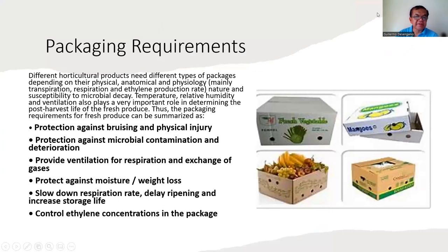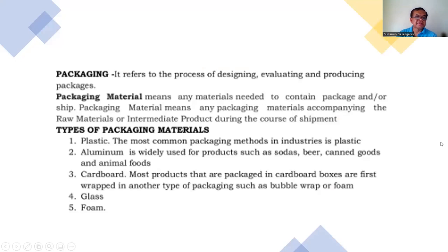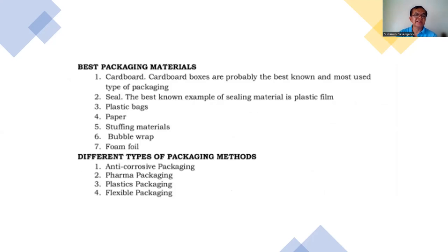Different vegetables have different packaging requirements — they should protect against bruising and physical injury. Packaging materials include plastic, which is the most common material used in the industry. Aluminum is useful for products such as sodas, beer, and canned goods. Cardboard is used for most products, and boxes can be wrapped in bubble wrap or foam. The best packaging materials include cardboard, seal, plastic bags, paper, stopping materials, bubble wrap, foam, and foil. Different types of packaging methods include anti-corrosive packaging, pharma packaging, plastic packaging, and flexible packaging.